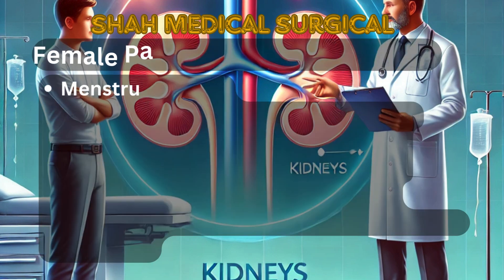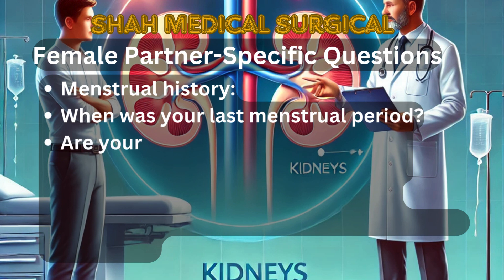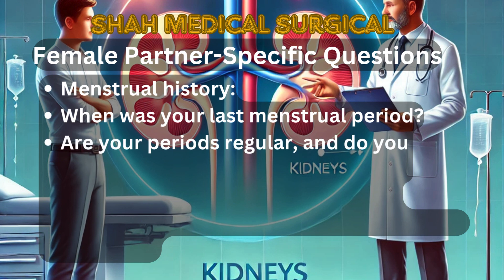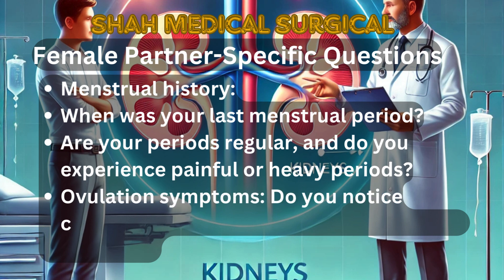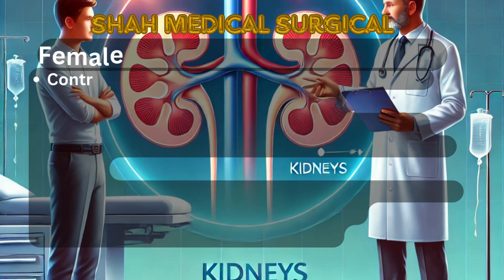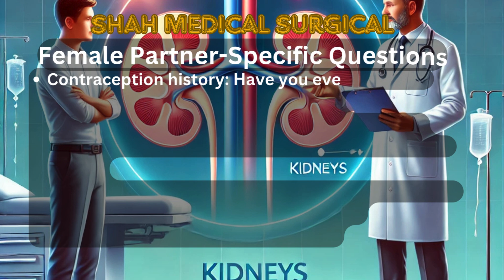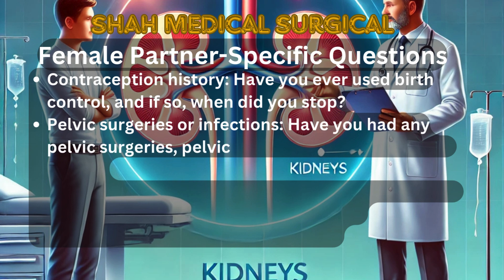Female partner specific questions include: 1. Menstrual history — when was the last menstrual period, and is it regular? 2. Ovulation symptoms — are there any signs of ovulation, such as changes in cervical mucus? 3. Contraception history — has the female partner used birth control, and when did she stop? 4. Pelvic surgeries or infections — have you had any pelvic surgeries, pelvic inflammatory disease (PID), or STIs?